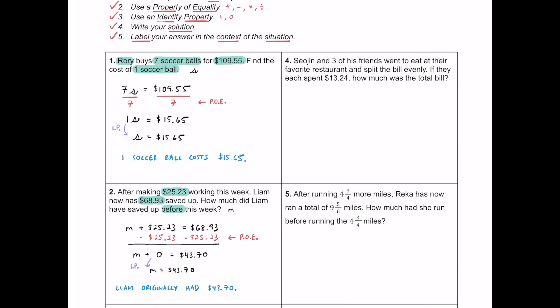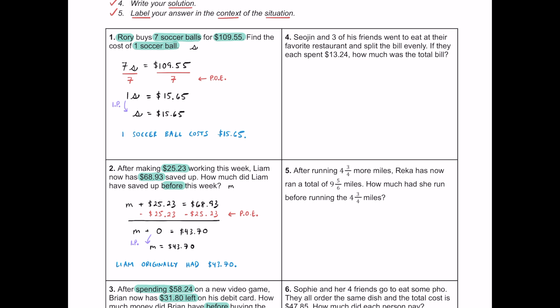Number four: Sojin and three of his friends — that's four people total — went to eat at their favorite restaurant and split the bill evenly. If they each spent $13.24, what was the total bill? I'll use C for the total cost. The total bill C is divided four ways, and each person pays $13.24, so C ÷ 4 = 13.24.